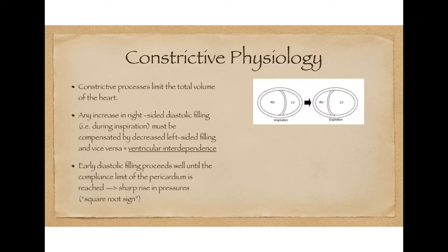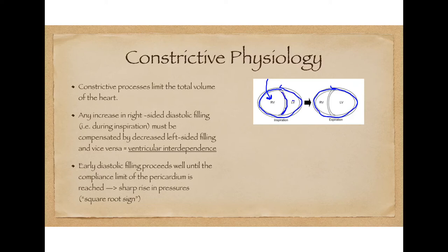In this diagram, we see a simple depiction of ventricular interdependence. In both inspiration and expiration, the total volume of the heart is fixed as a result of the non-compliant pericardium. During inspiration, increased venous return to the right side of the heart causes increased filling of the right ventricle. Because the total volume is fixed, the left ventricular volume must necessarily decrease, seen as a deviation of the interventricular septum towards the left ventricle. In early expiration, the opposite occurs — decreased right ventricular filling but increased left ventricular filling, associated with a deviation of the ventricular septum towards the right ventricle.